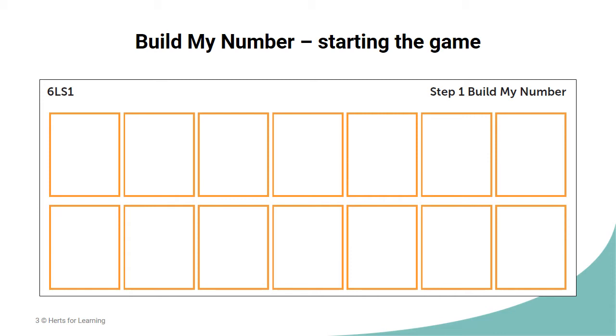As they are reading out their number, Player B should write the number down in their grid and then read the number out loud.